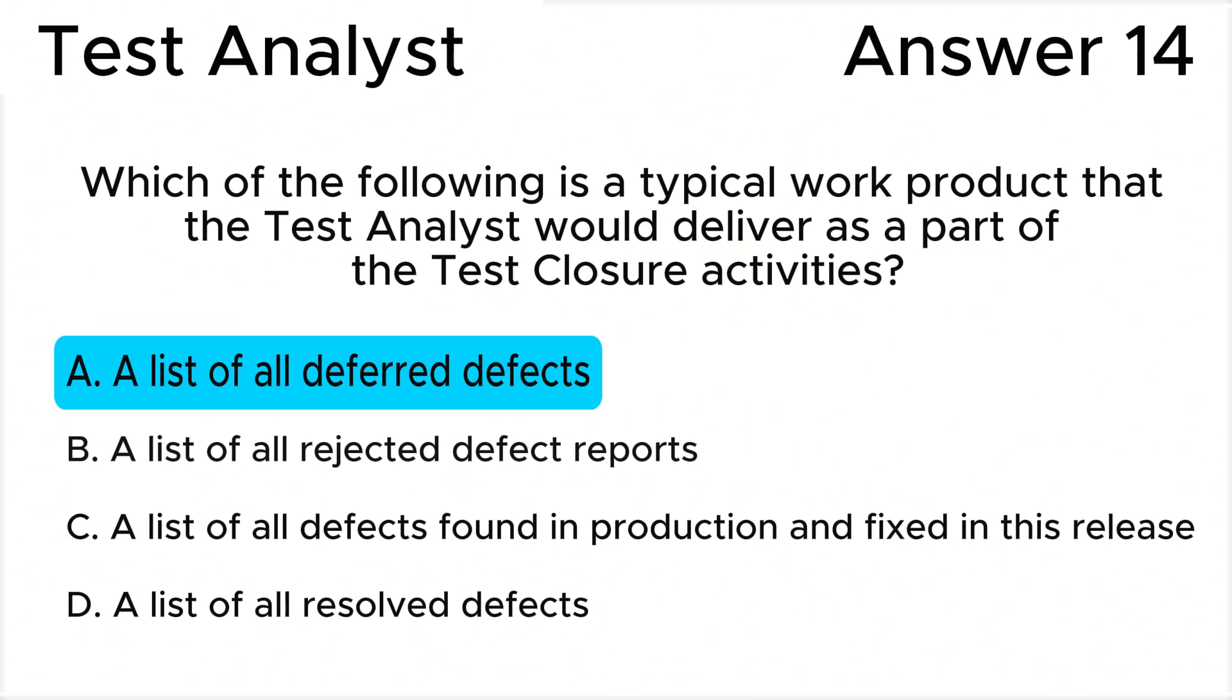All the rest of the answers are wrong. Answer B is wrong. Rejected defect reports are those that have been reviewed and determined not to be valid or are not going to be addressed. While this information might be part of the overall defect tracking process, it may not be a primary work product delivered during test closure.